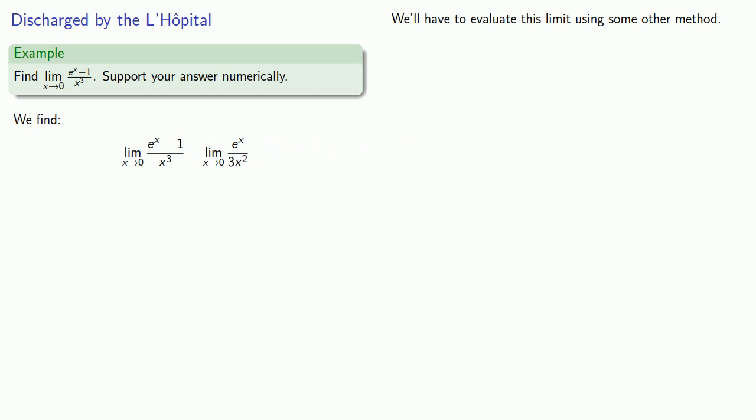And we might note that in this case, as x gets close to 0, e to the x gets close to 1, and 3x squared gets close to 0, but always stays a little bit more than 0. And so our limit tends to positive infinity.